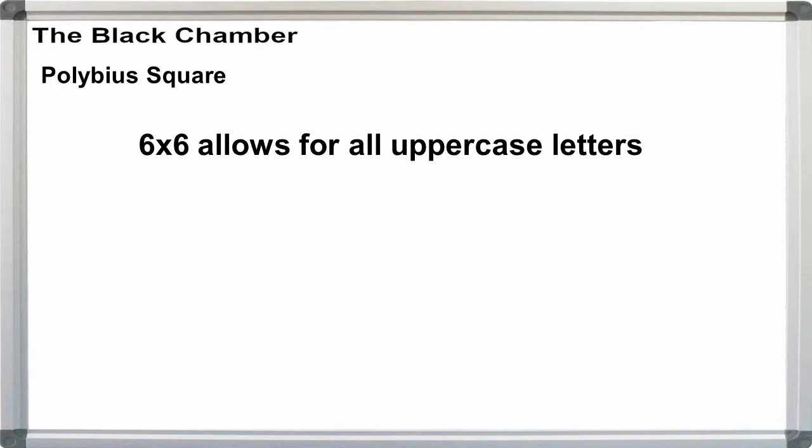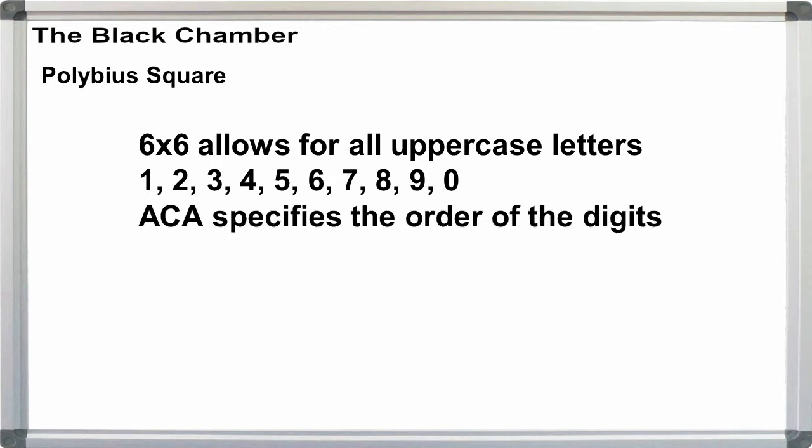The 6x6 square allows for all 26 uppercase letters plus the digits 1 through 9 and 0. But the American Cryptogram Association guidelines indicate a very specific order for placing the digits in the alphabet. That is, 1 follows A, 2 follows B, 3 follows C, up to 9 after I, and 0 after J.